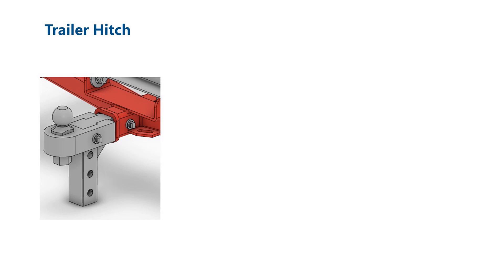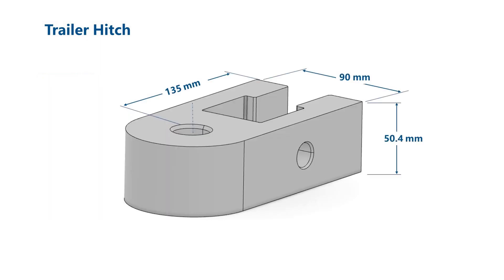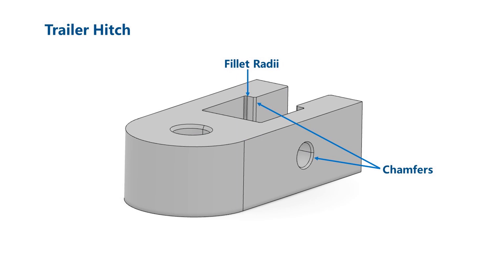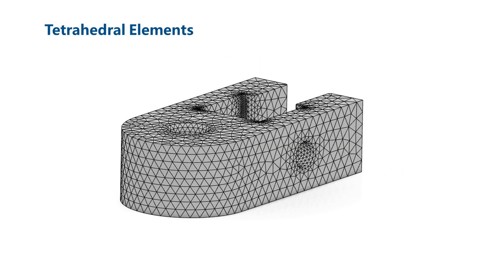First, we will examine the trailer hitch. More specifically, we will focus on a single component, the slotted lug. The length, width, and height of the lug are all of the same order of magnitude. The lug contains a slot and three holes. It also contains a number of chamfers and fillet radii. For parts like this, tetrahedral elements are a good choice.